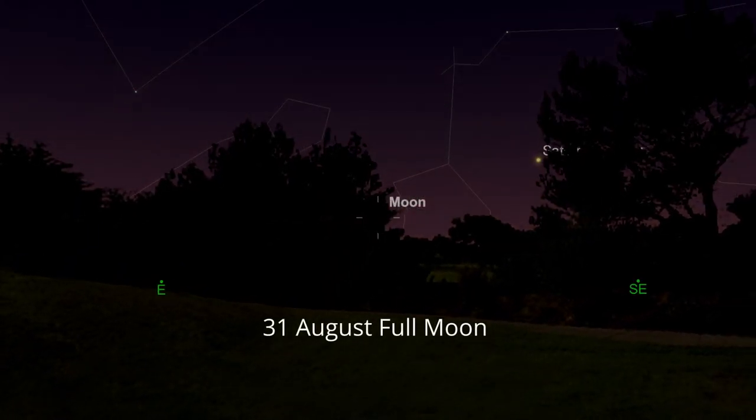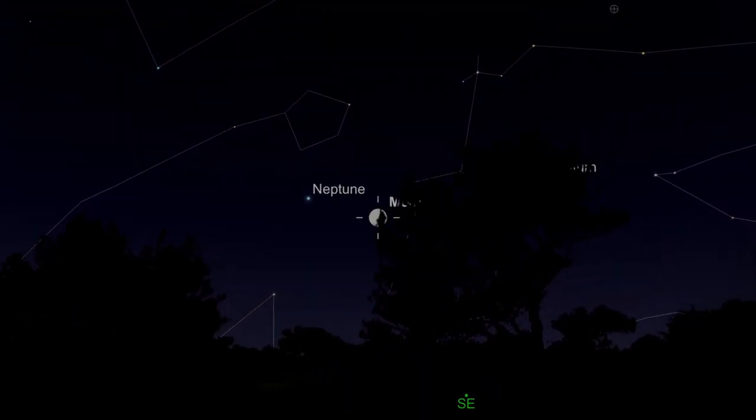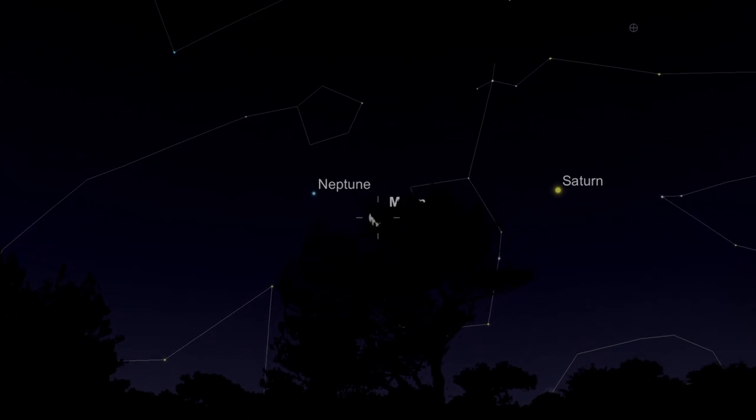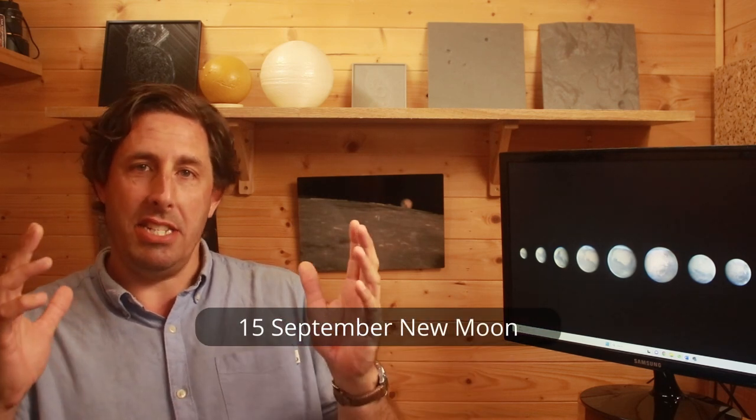If you remember last month we had a new full moon on the 31st of August, the supermoon, when the moon is closest to the earth. Two weeks after that full moon, middle of September, is the best time for deep sky observing.